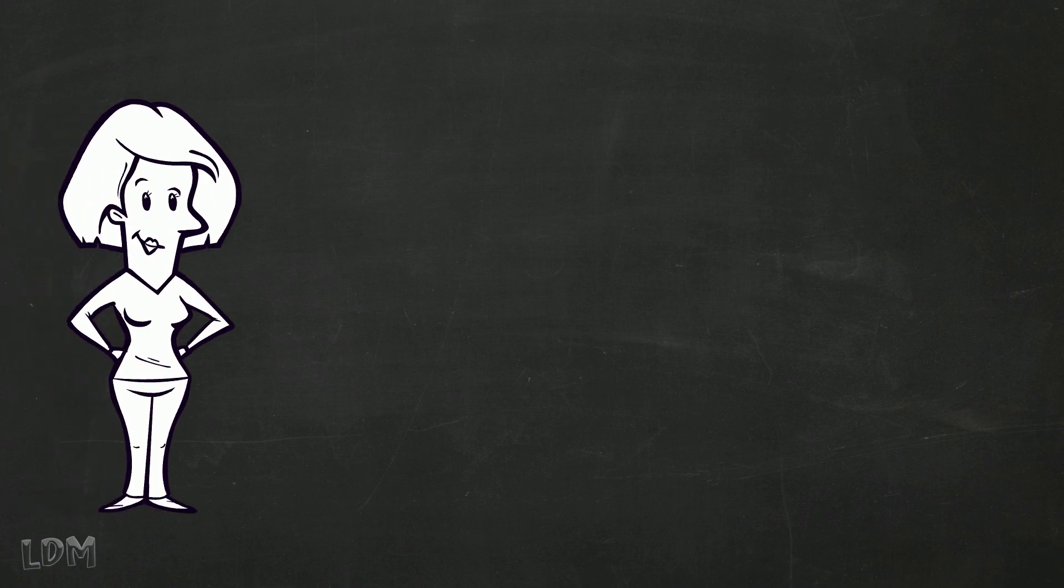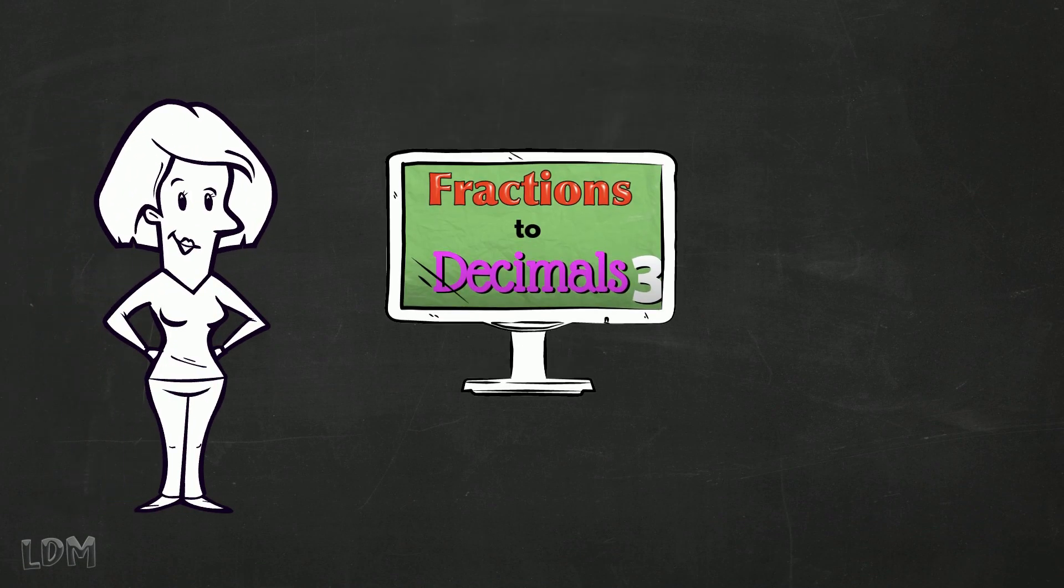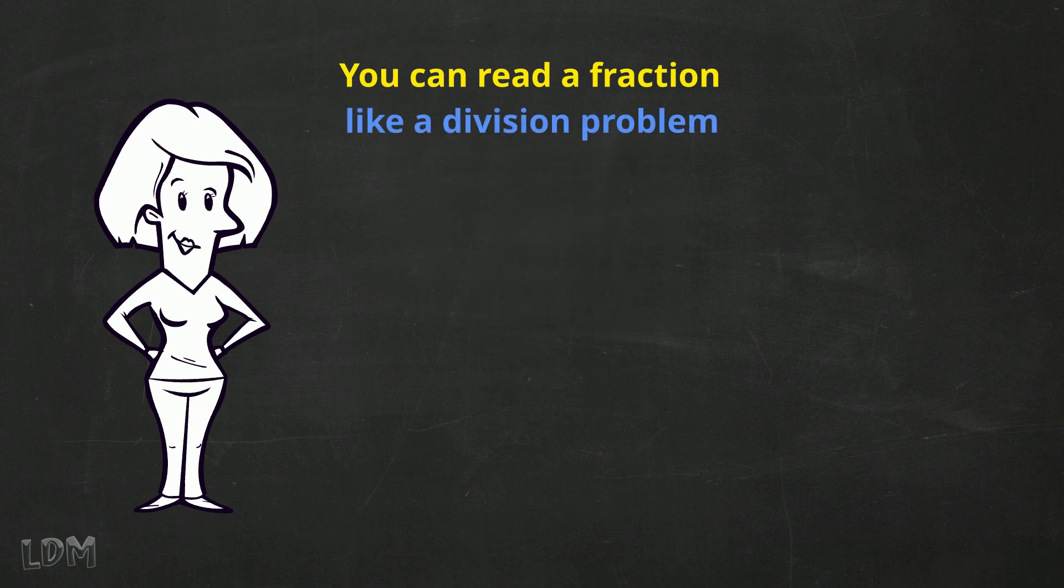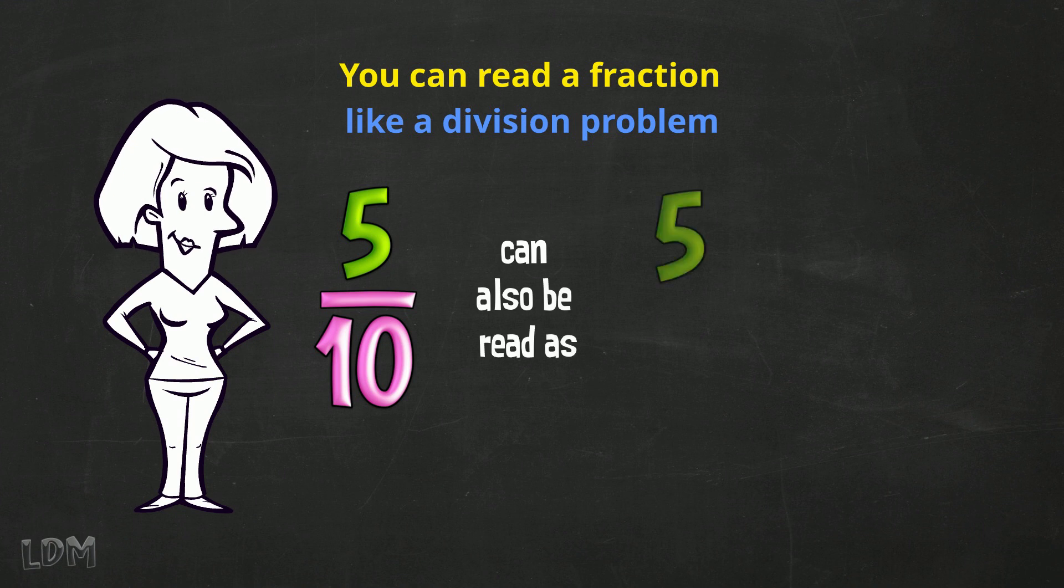If you saw my video on changing fractions to decimals Part 3, you know that you can read a fraction like a division problem. So 5 over 10, 5 tenths, can also be read as 5 divided by 10.